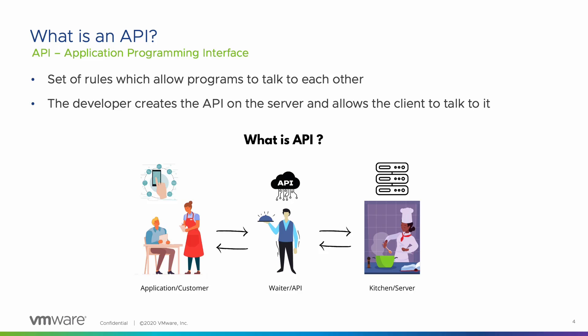An API is an application programming interface. It is a set of rules that allow programs to talk to each other. The developer creates the API on the server and allows the client to talk to it. You can think of this like a transaction in a restaurant. The customer acts as the application, inputting his desired order to the waiter. The waiter acts as the API, relaying the order to the kitchen staff. The kitchen staff acts as the server, using the request from the waiter to return the desired order, or data, to the customer. The waiter then returns the order to the customer in the form of a response. Essentially, the API acts as a middleman, relaying requests to the server and responses to the application.